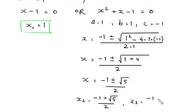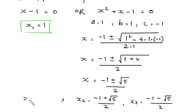So we get two more values: x₂ equals (negative 1 plus square root of 5) divided by 2, and x₃ equals (negative 1 minus square root of 5) divided by 2. And we already found x₁ equals 1. These are the three solutions of this equation.